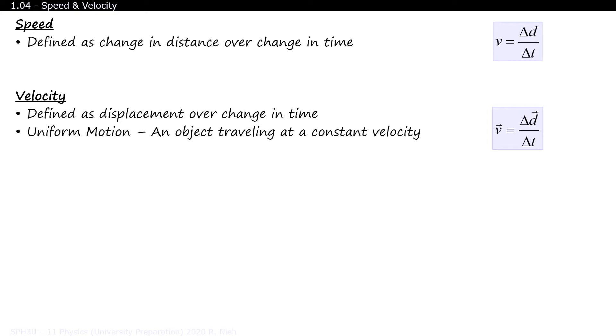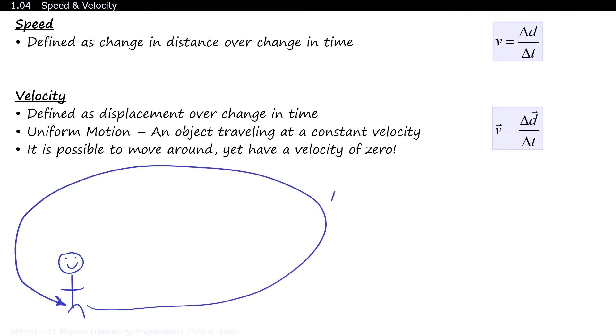The weird thing about velocity is that it is possible to have a measurable speed, yet have a velocity of zero. For example, if I walk for 30 meters around the classroom, and it takes me 20 seconds to go all the way around, then I'll be walking with an average speed of 1.5 meters per second.